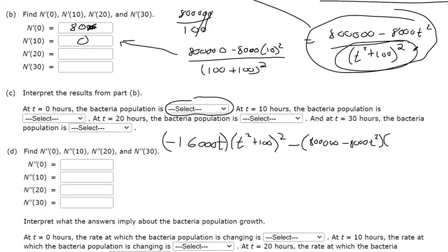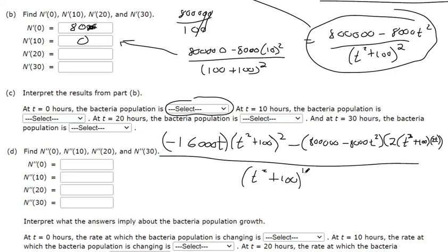Minus the top function times the derivative of the bottom function. So this one needs chain rule. The derivative of t squared plus 100 squared is 2 times (t squared plus 100). Took a derivative of the outermost function. And then I'm going to multiply that by 2t, the derivative of the innermost function. Because the derivative of this innermost function is 2t. So that's the chain rule.